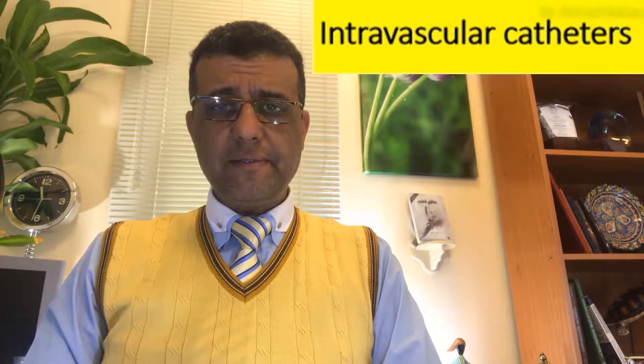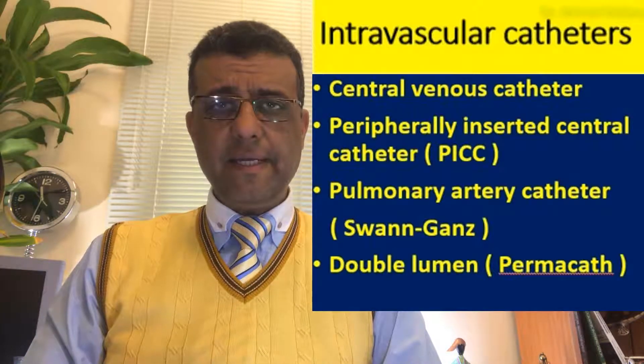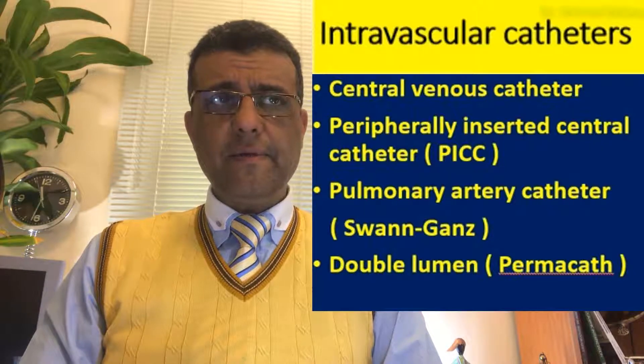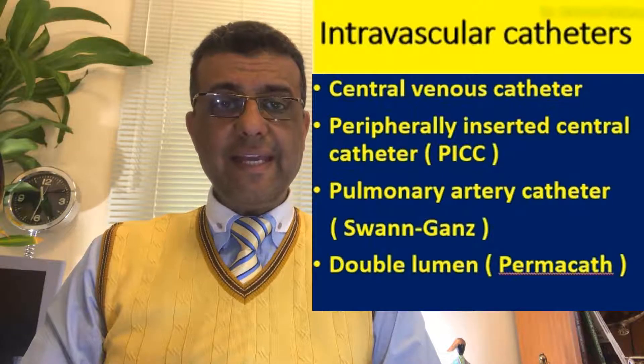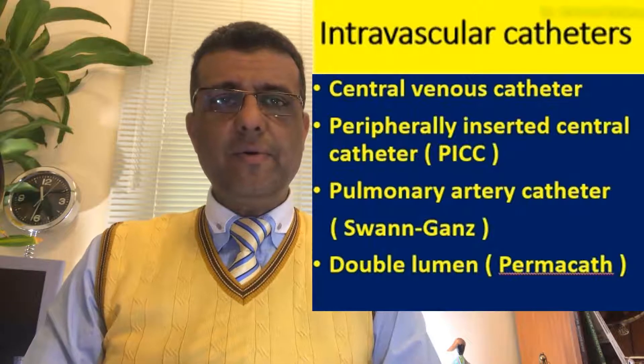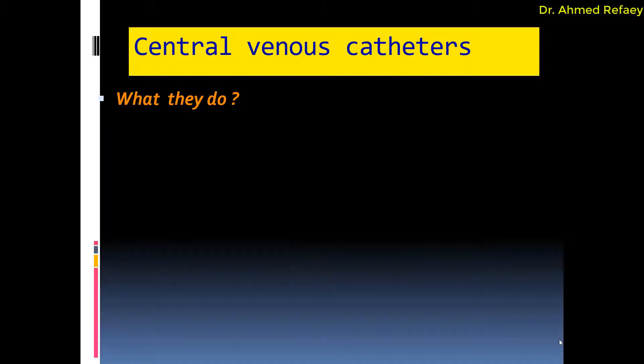Continuing today with misplaced lines and tubes in the chest. In the last episode we finished endotracheal tubes. Today I will give you an idea about the intravascular catheters, which include central venous catheters, peripherally inserted central catheters or PICC, pulmonary artery catheters or Swan-Ganz catheters, and the hemodialysis catheter, also known as double lumen catheter or permacath.